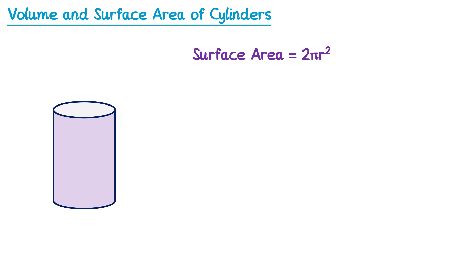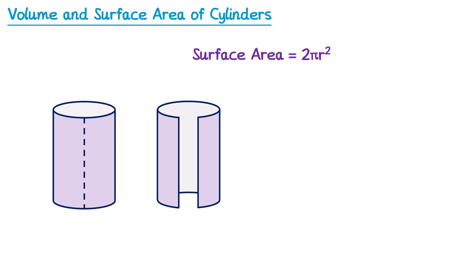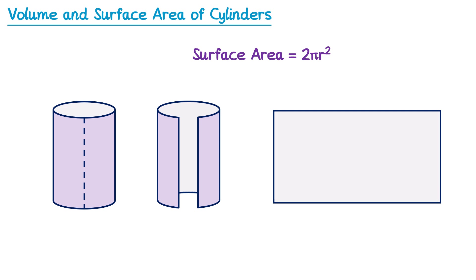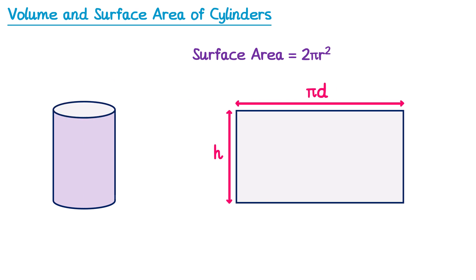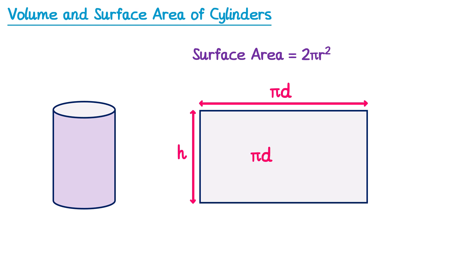How do we find the area of this curved face? Imagine that this cylinder is a tube, and we cut down the tube along a line. We could then unwrap the tube, and if we roll it out fully, it would form a rectangle. The height of this rectangle will be the same as the height of the original cylinder, which we call h. But what about the width of the rectangle? If you began to roll this rectangle back up to a cylinder, you'd see that this length matches the edge of the circle — the circumference of the circle. The formula for the circumference is πd, so the width of this rectangle is also πd. We can find the area of the rectangle by multiplying πd and h together, which gives πdh. So the area of the curved surface of the cylinder is πdh.